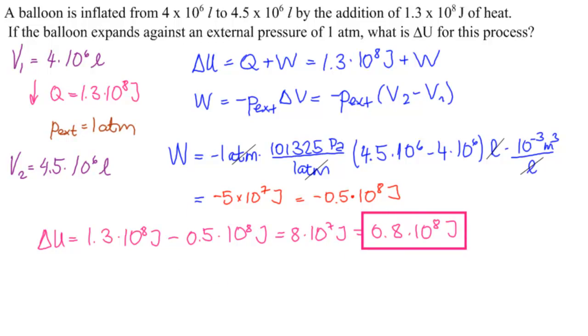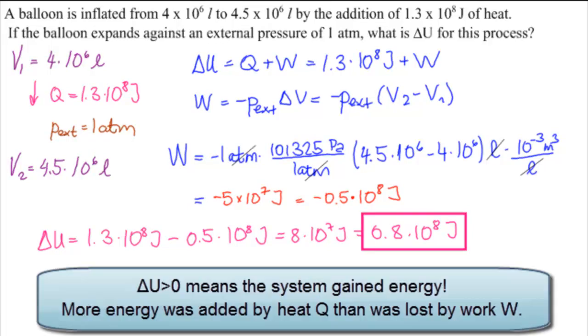So that's the answer to that question. Notice that delta U is positive, so the system gained energy. That is, more heat was input than was lost through work, so that the system has gained energy. Thank you.